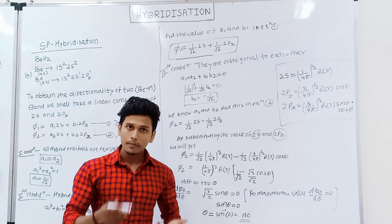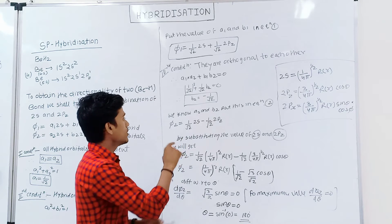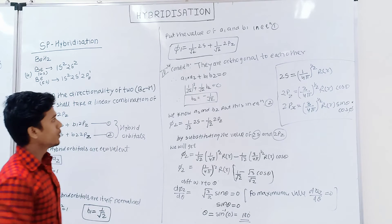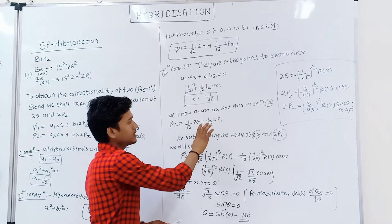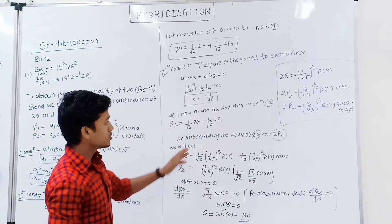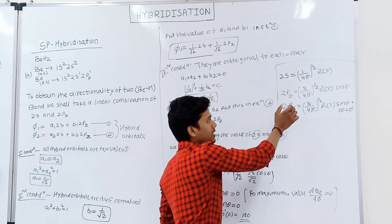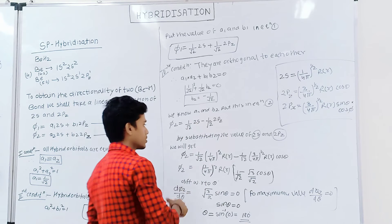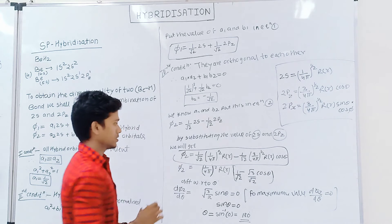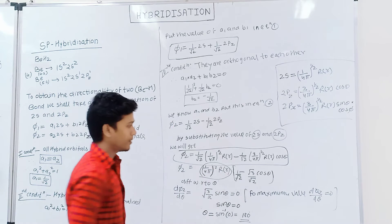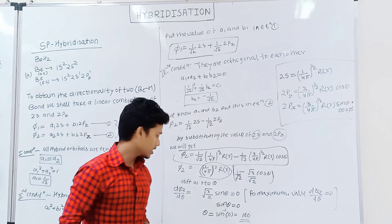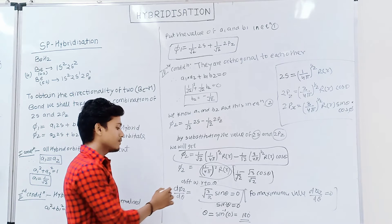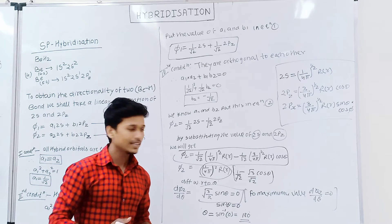Now we know the values of a2, b2, and b1. We put these values into equation number 2 for phi2. Substituting the values of 2s and 2pz into this equation gives us the phi2 equation. From here we take a common term and differentiate with respect to theta. Differentiating this equation with respect to theta gives us a new equation.